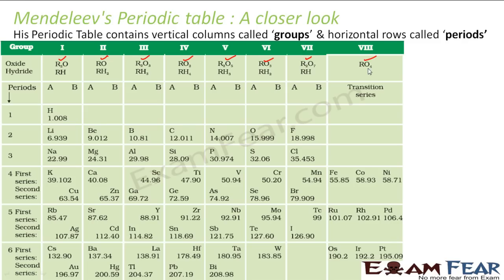Based on these two sets of formulas, he found elements for each combination and clubbed all elements forming similar hydrides and similar oxides into one group. He called his vertical columns as groups.